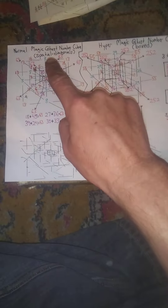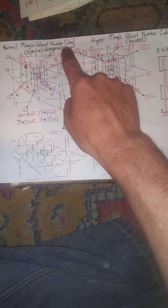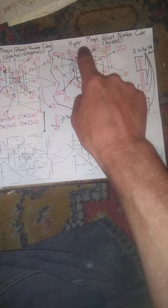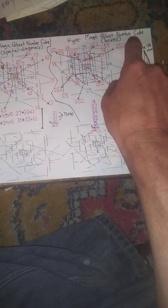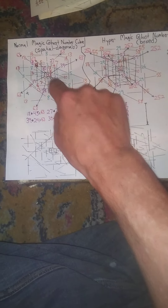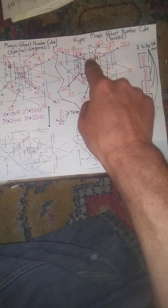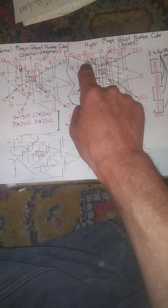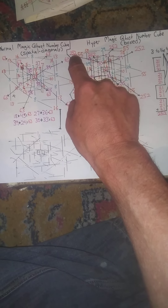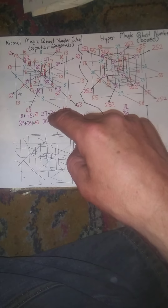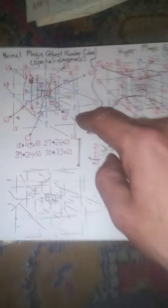This is a normal magic ghost number cube with special diagonals, next to a hyper magic ghost number cube that's boxed. This is special diagonals and this is boxed. I drew the lines in at the last moment to show that they still relate to the other ghost on this, but the central ghost...